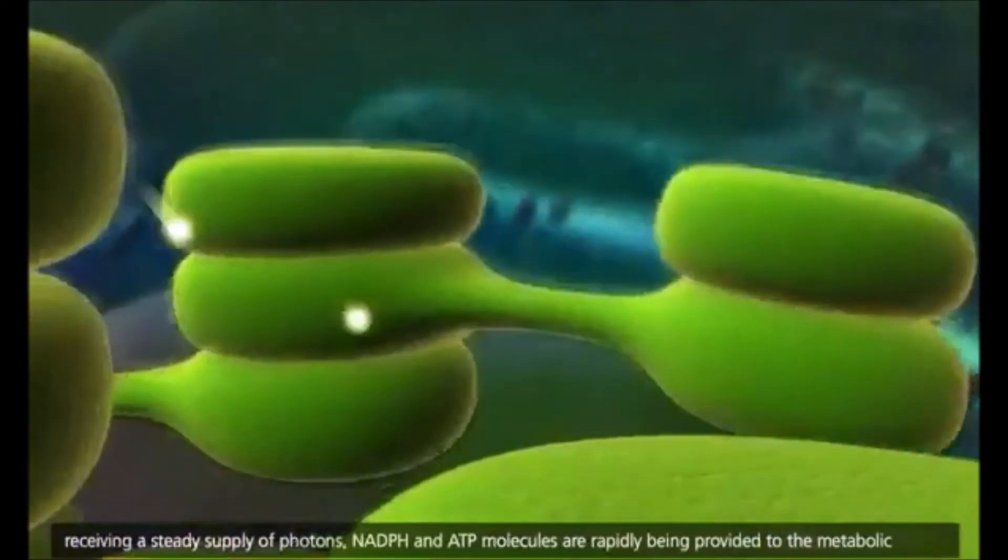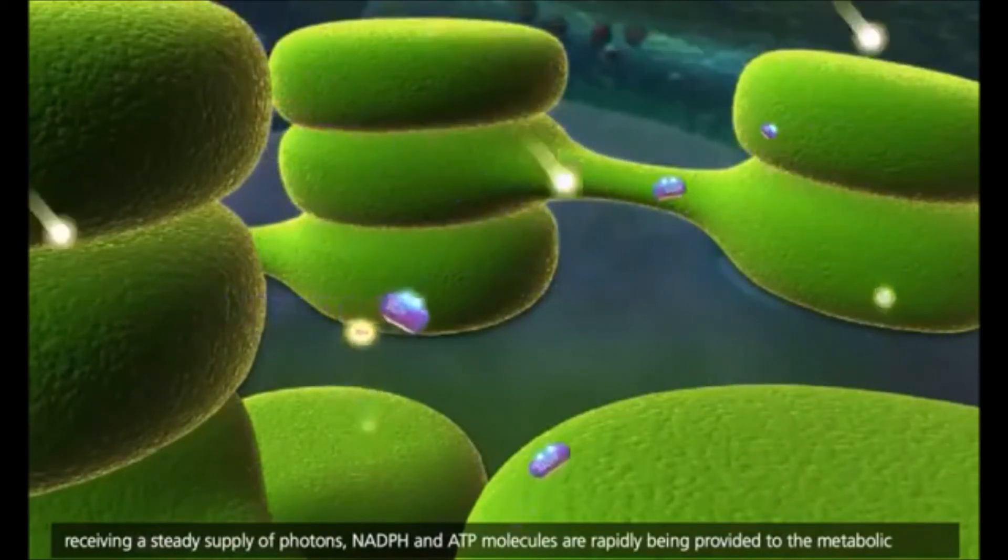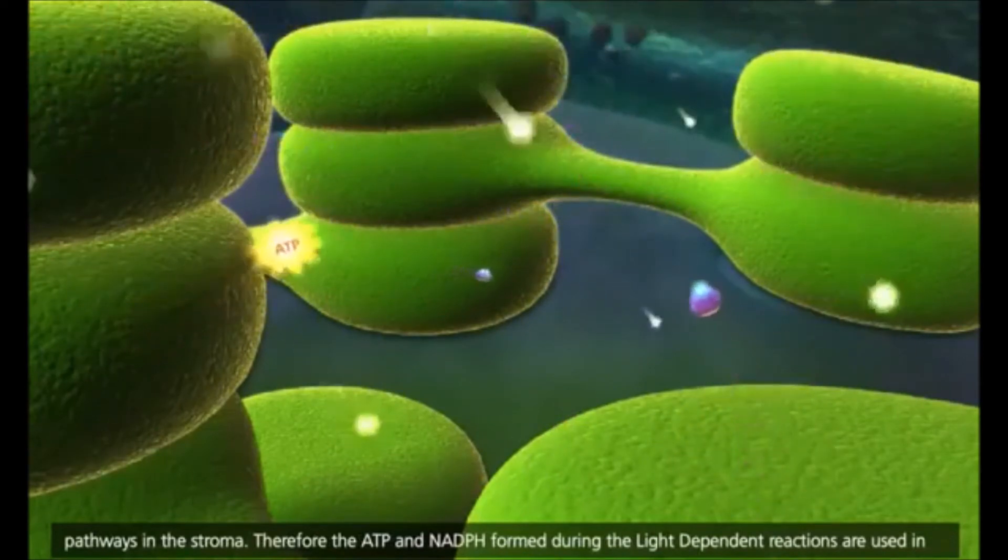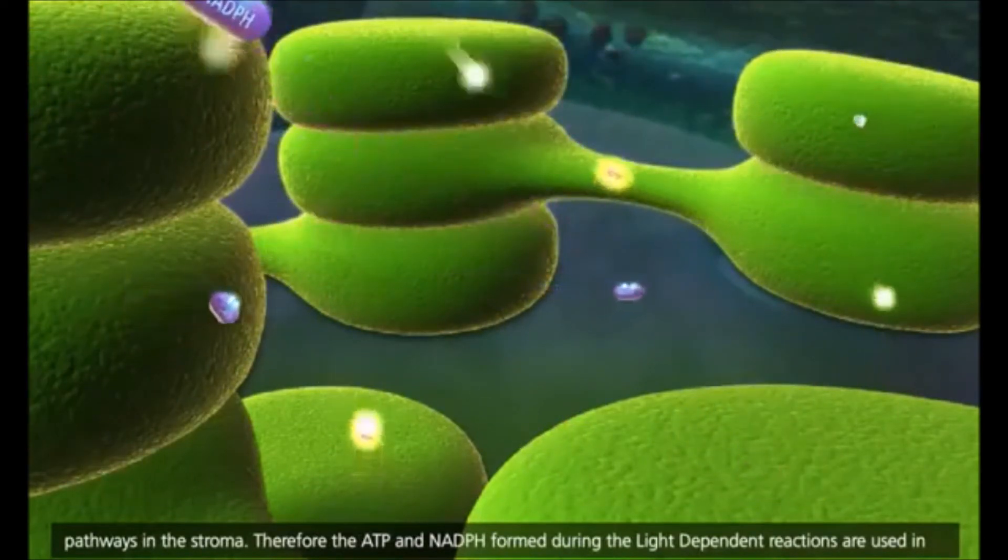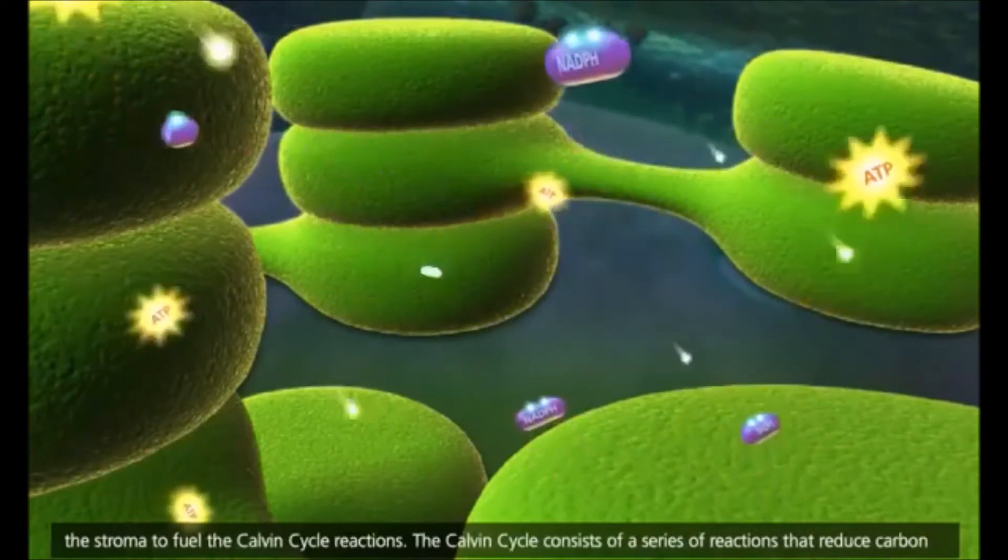When the chloroplast is receiving a steady supply of photons, NADPH and ATP molecules are rapidly being provided to the metabolic pathways in the stroma. Therefore, the ATP and NADPH formed during the light-dependent reactions are used in the stroma to fuel the Calvin cycle reactions.